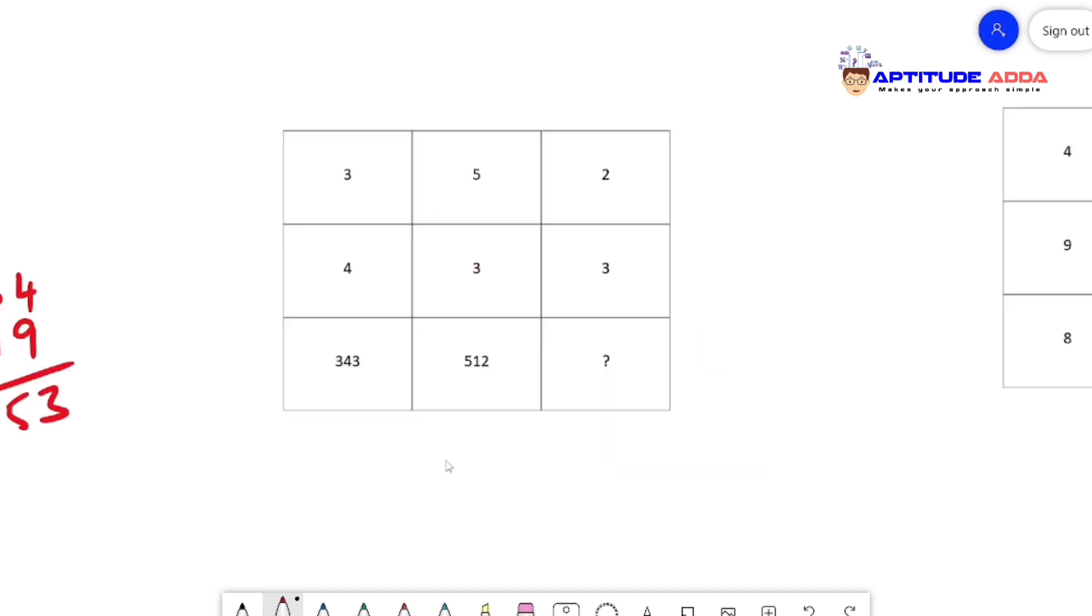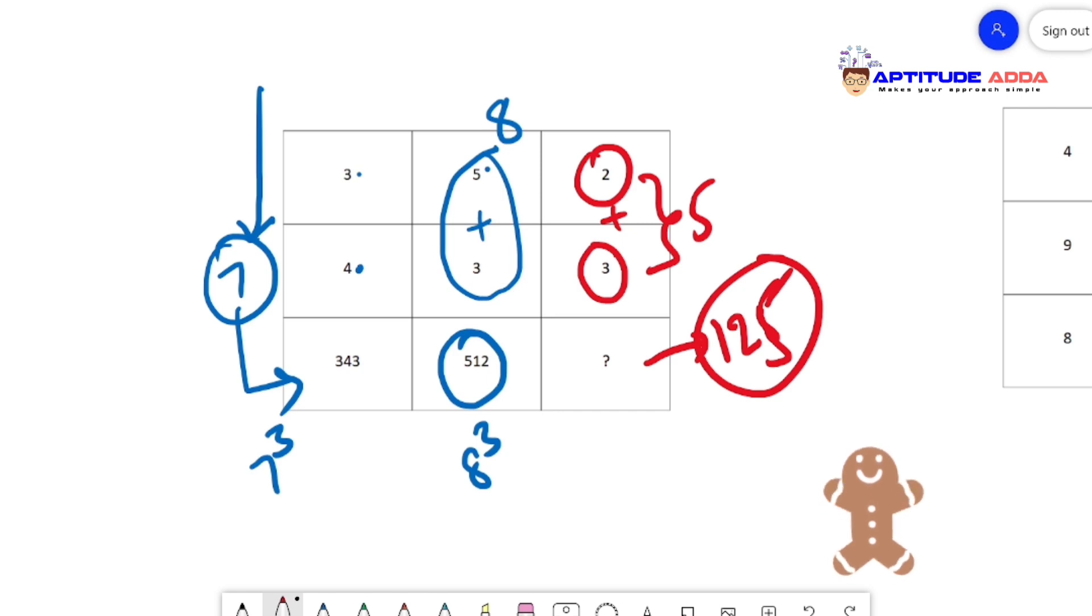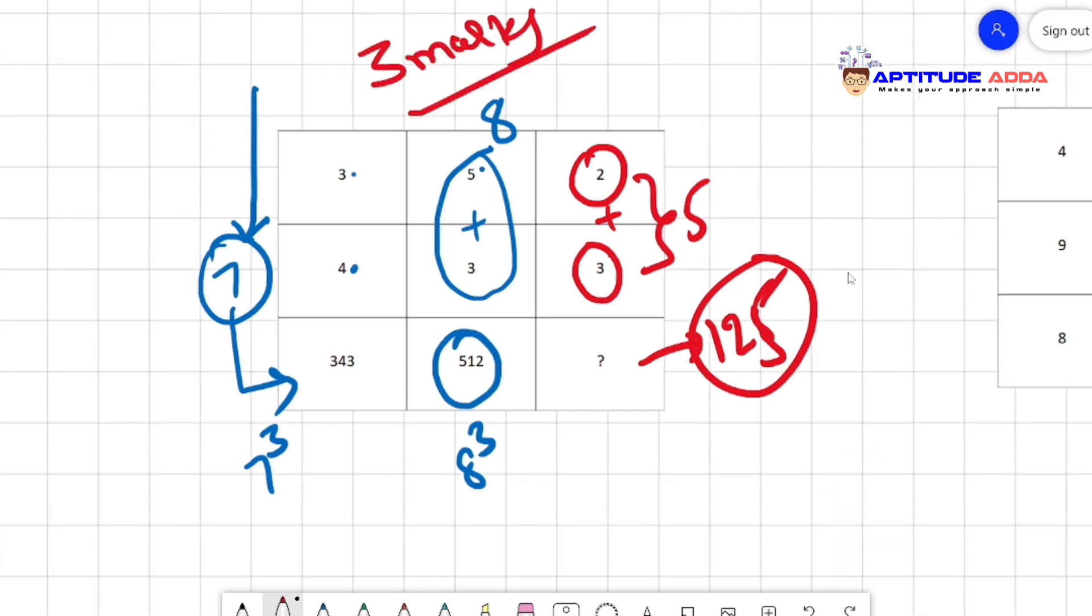Let's move to the next problem. Can you observe the last row has bigger numbers? So first two rows need some mathematical operations to get the last row. The logic is in columns. Three plus four is seven, and seven cubed is 343. Similarly, five plus three is eight, and eight cubed is 512. Two plus three is five, and five cubed is 125. So 125 is the answer.